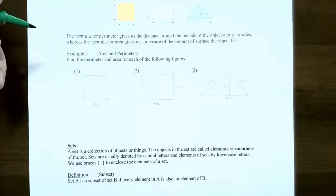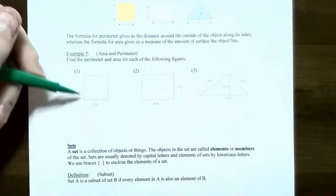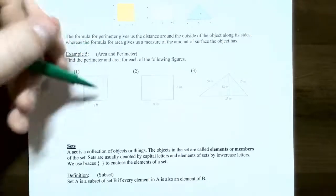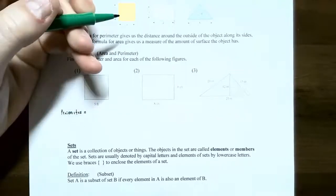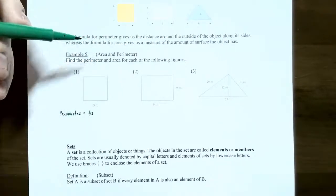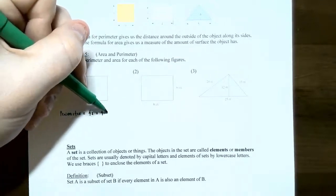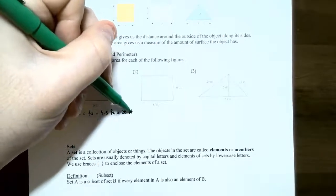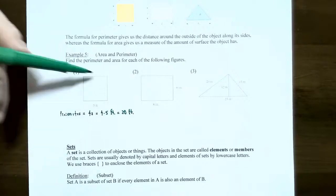Example five: we're going to find the area and perimeter. Number one, find the perimeter and area for the following figure, which is a square where each side has length five feet. The perimeter is 4 times s. s is the length of one side, which is 5 feet, so you have 4 times 5 feet, which is 20 feet. Notice that perimeter doesn't have square units — it's just a distance. So perimeter is 20 feet around this square.